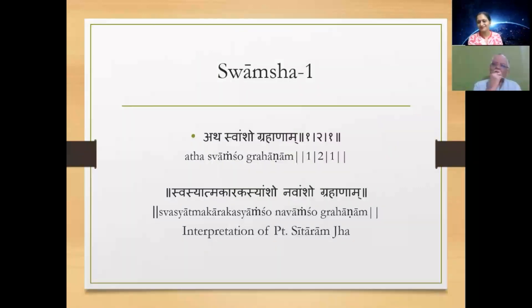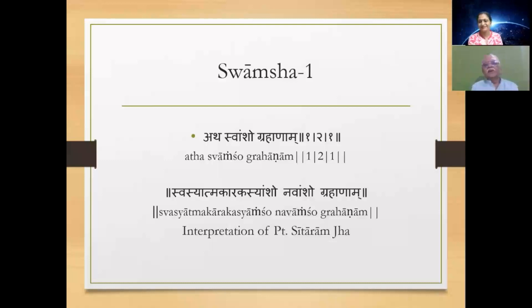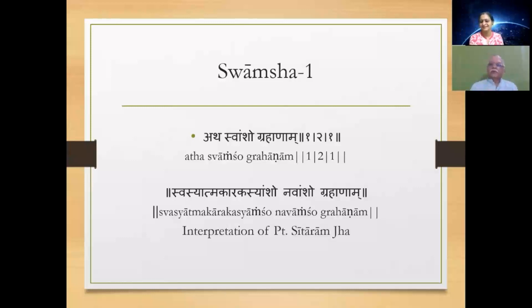I follow more the lines of Sitaram Jha, who has written a great commentary on Jaimini Sutra. He says 'Swamsha Atma Karakasya Aamsho Navamsho Grahanam,' meaning when a planet is in a particular Navamsha, that is called Swamsha. So what we are looking at now is the position of Atma Karaka in Navamsha Rashi, not in the Rashi chart.